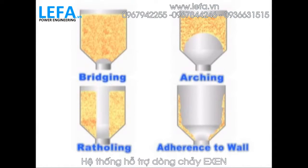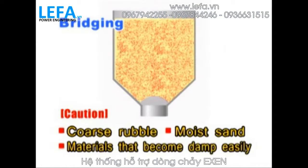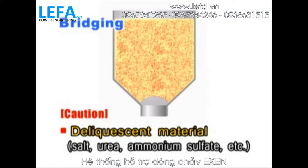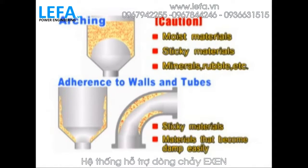Causes of blockage, in addition to ratholing, vary according to the shape of the tank and materials being handled. A phenomenon called bridging is common when the exhaust port in a tank is small. One must be especially careful with sand that has high moisture or materials that easily become damp — salt and urea can also cause this problem. Because these materials tend to harden during periods of high humidity, special caution is required. In addition, arching and attachment to walls tend to occur with certain materials.